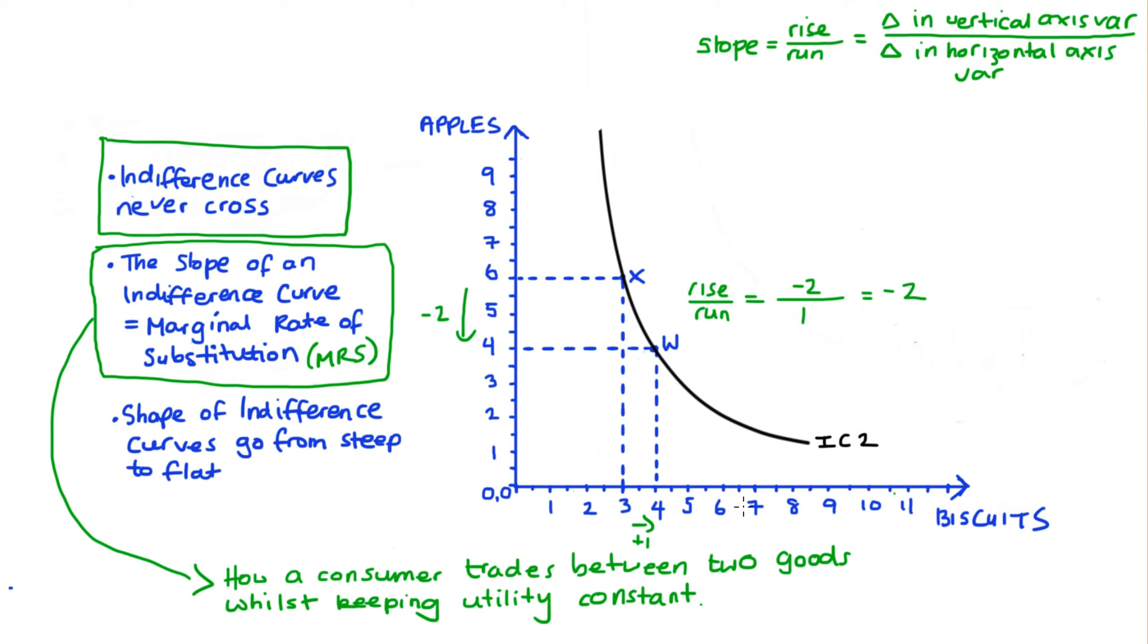Now there is a sleight of hand here because my indifference curves are curved. And so me treating this ratio here as a slope is a little bit cheeky because technically the slope is actually slightly different at point X and at point W. Now indeed, when we talk about the MRS, we're talking about the slope at a particular point on the curve, not the slope of the straight line which connects two points, as I've implicitly done here.